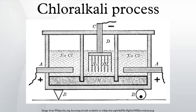The chloralkali process is an industrial process for the electrolysis of NaCl. It is the technology used to produce chlorine and sodium hydroxide, which are commodity chemicals required by industry. 35 million tons of chlorine were prepared by this process in 1987. Industrial scale production began in 1892.